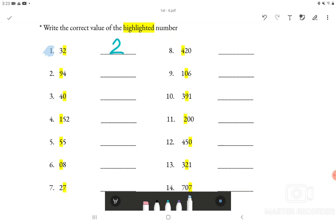Looking at number 4 we have 152 and the highlighted number is 1 which is in the hundreds place. So we would have to write 100 as the answer.